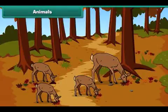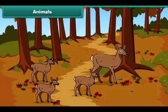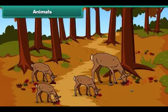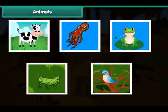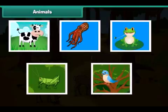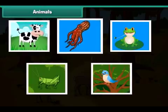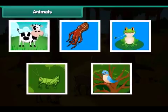Friends, as we all know, animals are living organisms. They can move and grow. They have the ability to produce their own young ones. We can see different animals all around the world. They are in various sizes, shapes and colors. There are different types of animals living on this planet: land animals, water animals, amphibians, insects and birds. Let us know more about them.